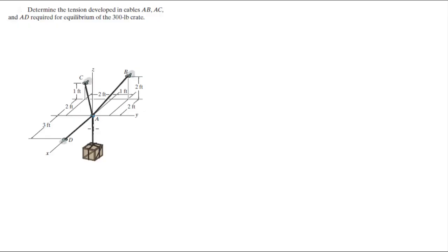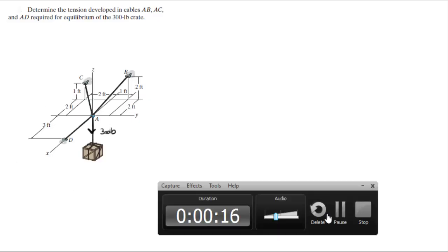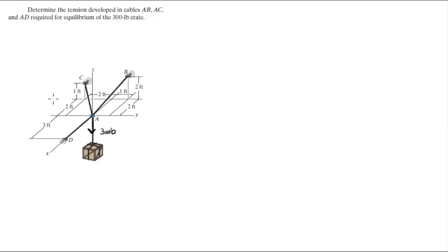You have a force right down here of 300 pounds, and you have another three forces: one going towards B, one going towards C, and one going towards D in order to maintain this system at equilibrium. We're going to break this system down into unit vectors and then create our equations and solve for all the components.